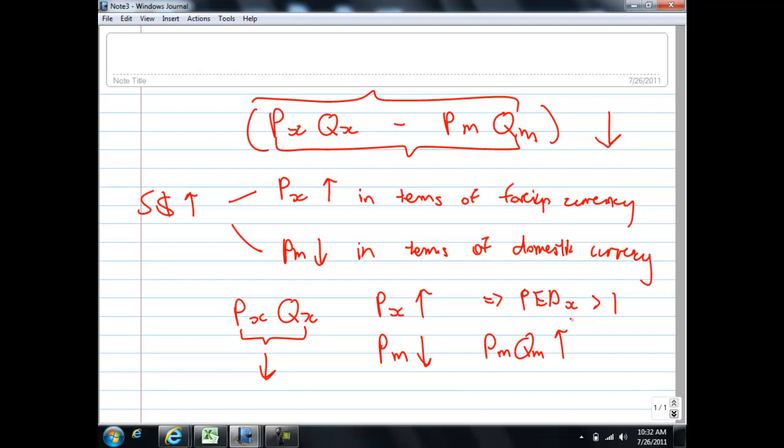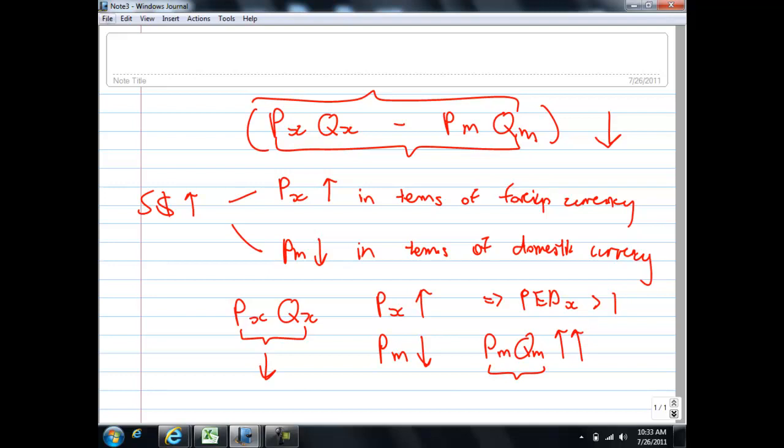Again, if the demand for the imports are price elastic, a fall in the price of imports will lead to a more than proportionate rise in the quantity demanded for imports, thus leading this entire term to rise, which is what we want. So let's move on to the next note.